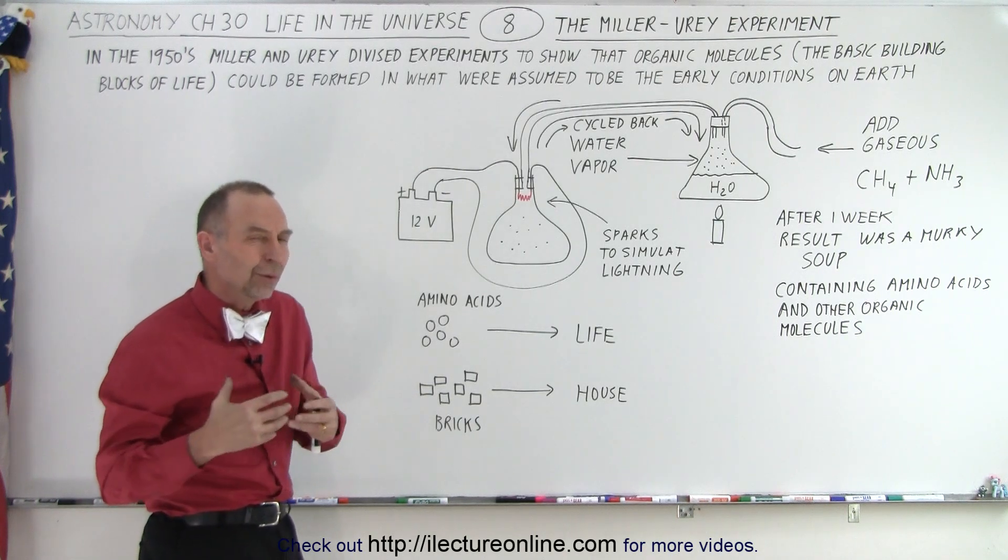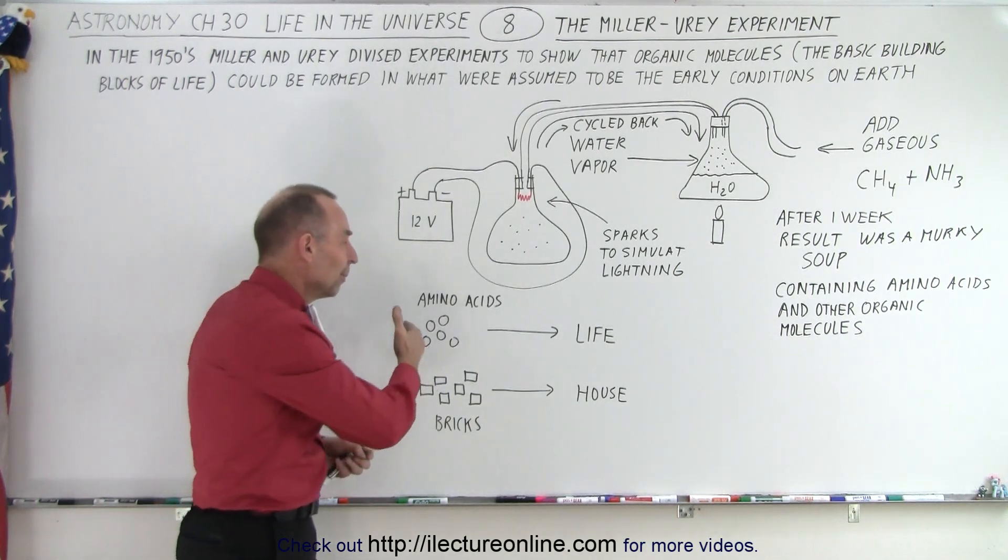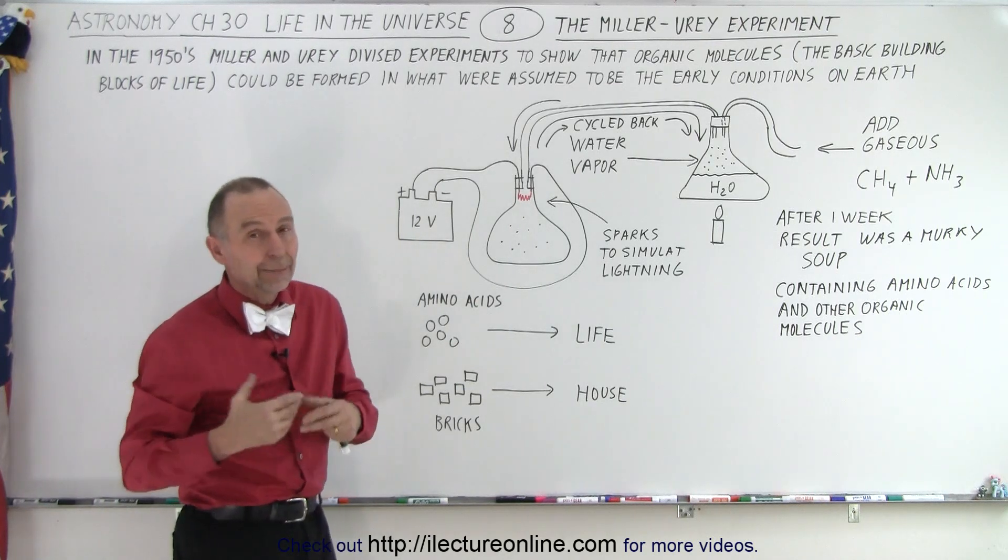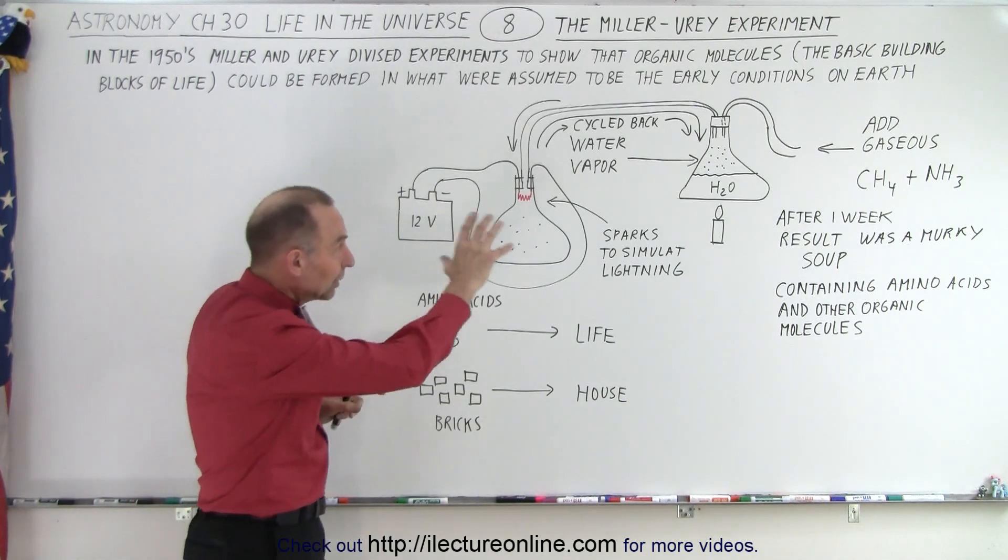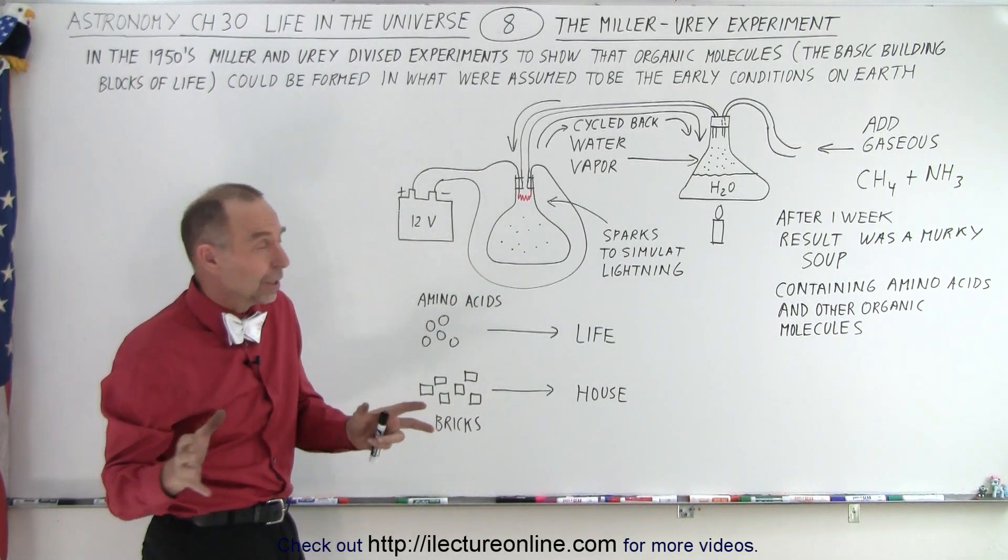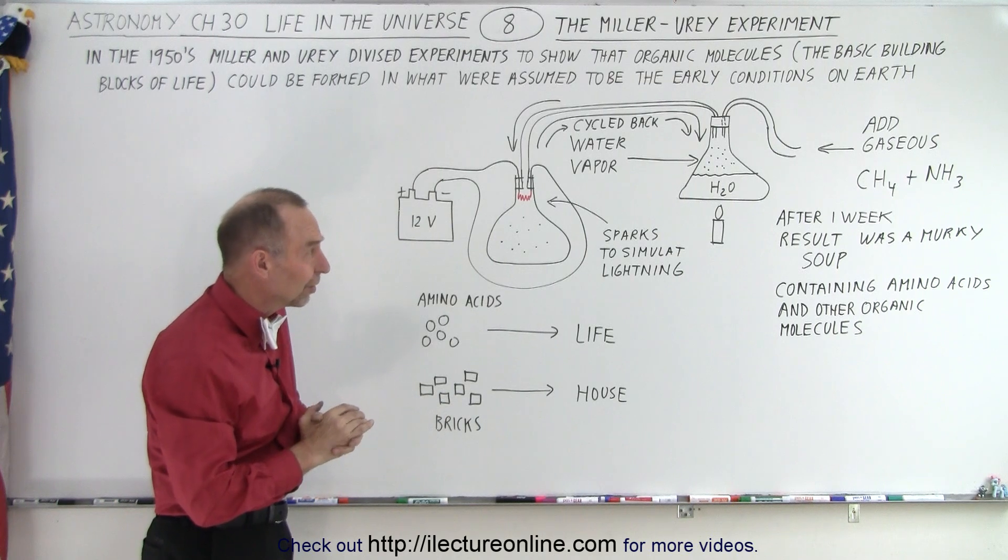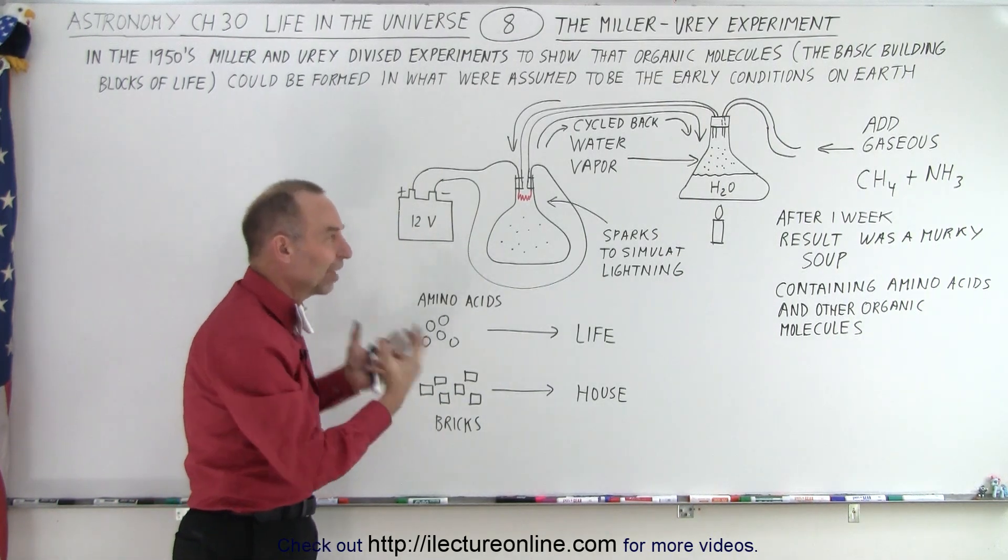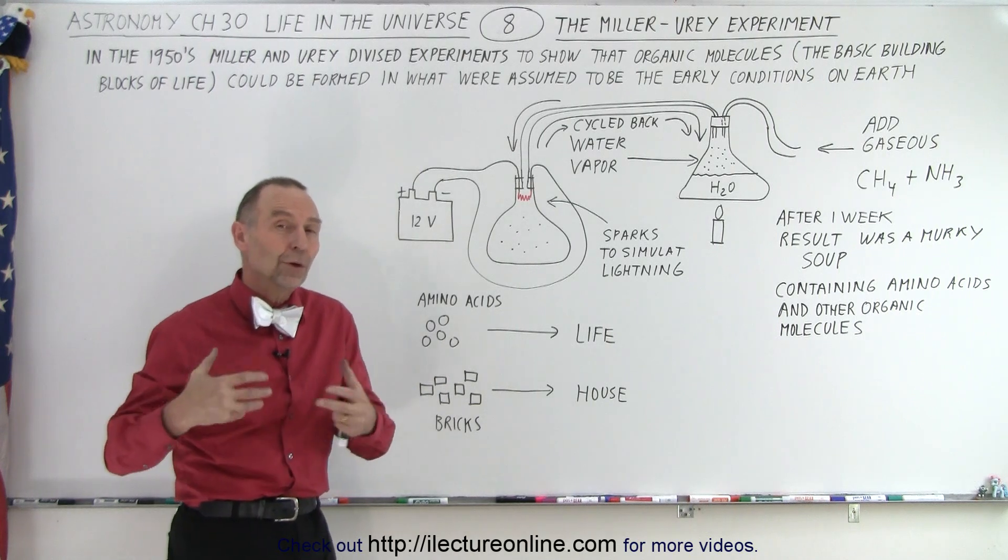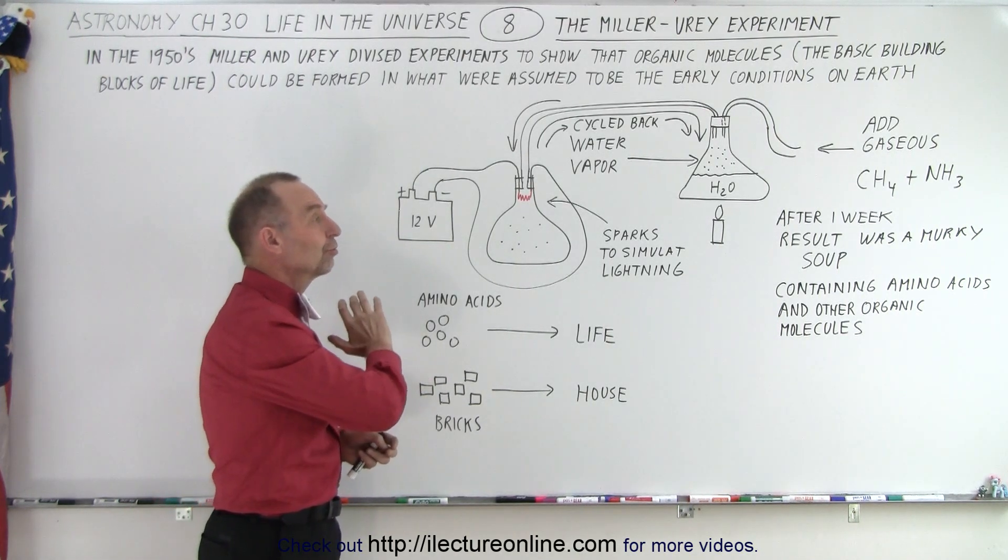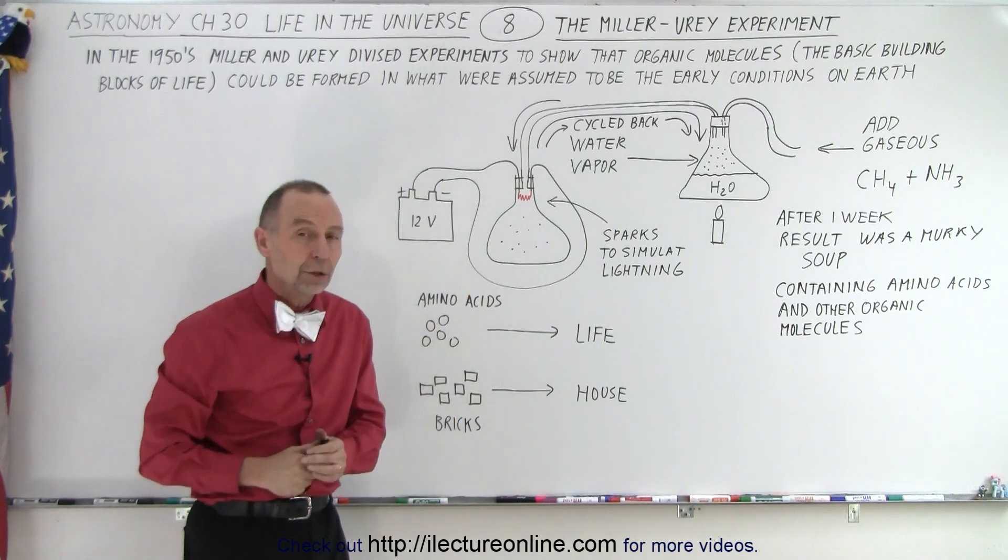So we still are a long ways from bridging that gap. Now, since then, other experiments were done. They began to realize that the gases that they were using in their flask were probably not what it was like in the early Earth's atmosphere. They tried to come up with a better mixture of gases that more represented what they thought was going to be the early atmosphere of the Earth. And when they did those experiments, they produced far fewer organic molecules.